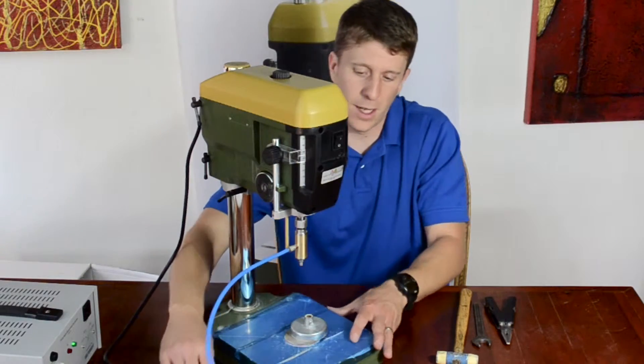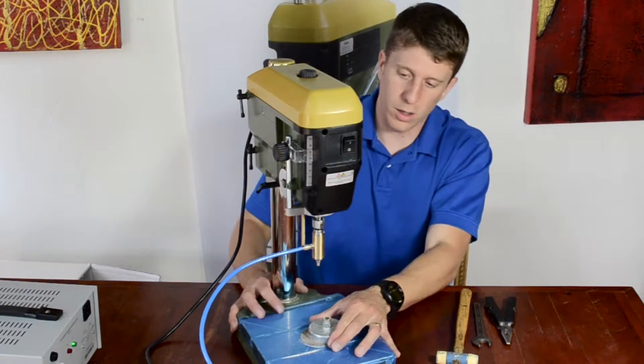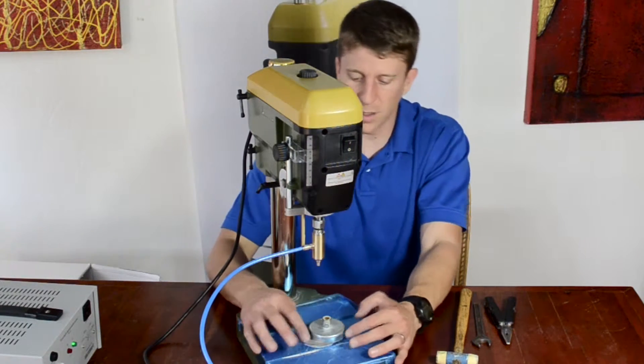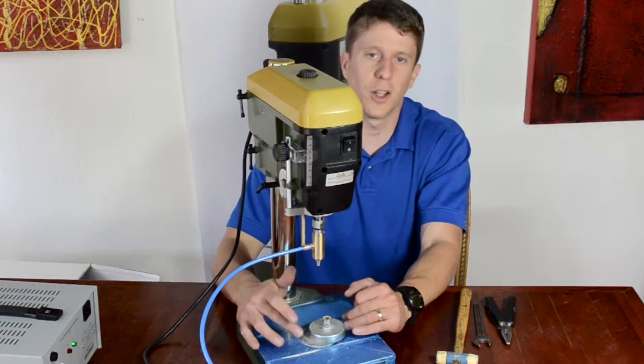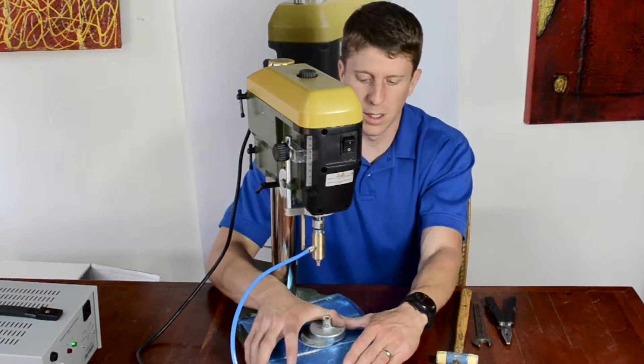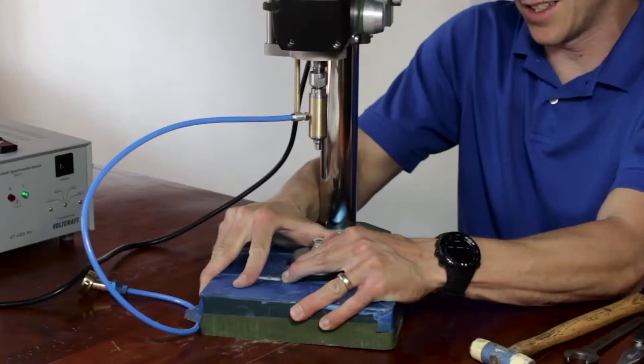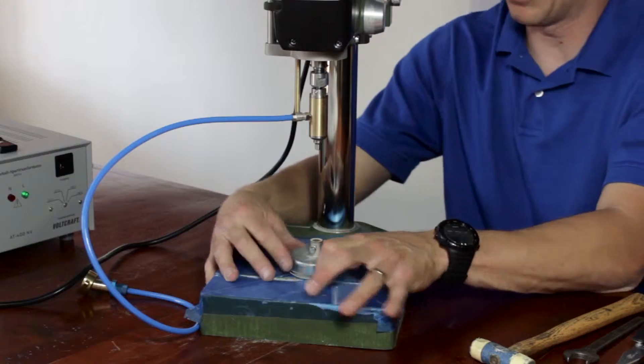Next, you're going to want to kind of do a coarse adjustment with your magnet. It's probably offset a little bit because the head was lowered and we don't want it hitting in transport. So just kind of slide it over to the center of the magnetic base. It doesn't have to be perfect, but just kind of center it.